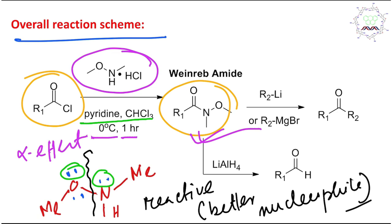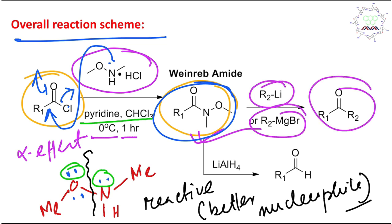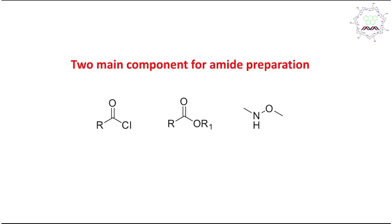That is why this reagent is far more reactive for nucleophilic addition, or more specifically, acyl nucleophilic substitution: it attacks, opens up, comes back, and leaves — in this way the amide is prepared. This amide then reacts with RLi or RMgX to produce a ketone, while lithium aluminium hydride, as a hydride nucleophile, produces an aldehyde. We will learn more through examples and mechanisms.